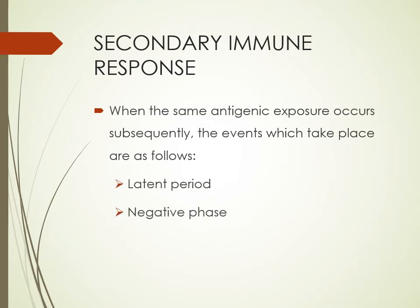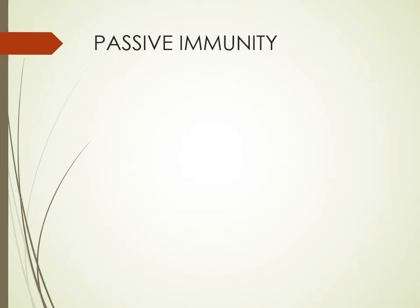In the secondary immune response, the latent period is almost absent because memory cells are present. The lag period is present in primary immune response. In the negative phase, the low-level IgM antibodies from the primary response bind to the second antigen exposure, forming antigen-antibody complexes, causing the previous antibody level to fall. Then IgG antibody starts forming in the body and the antibody surge is seen, with high titer IgG maintained.